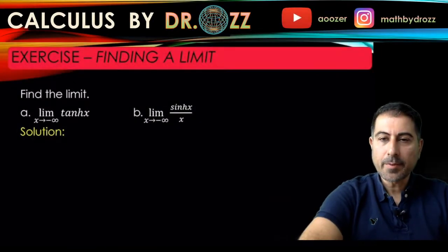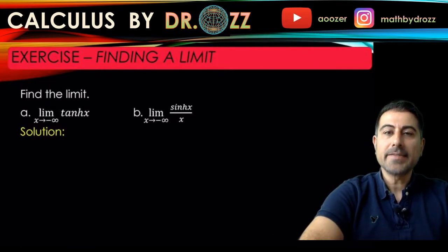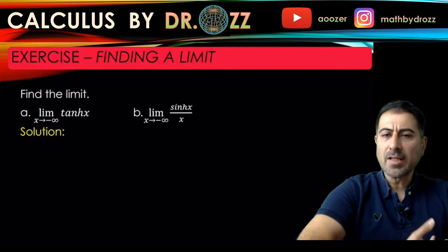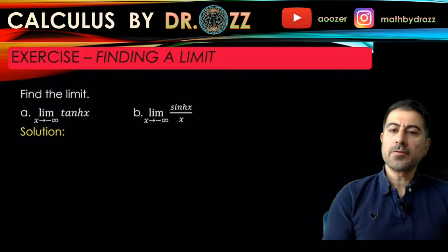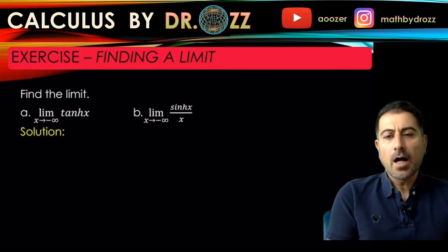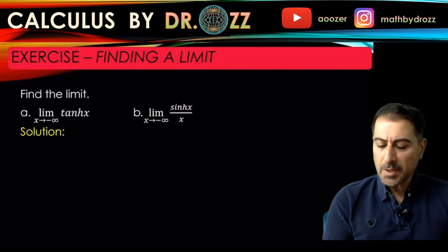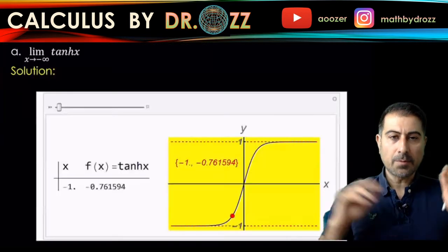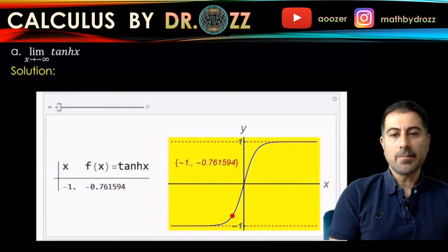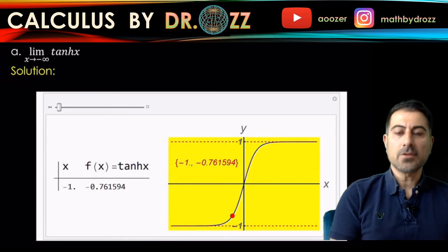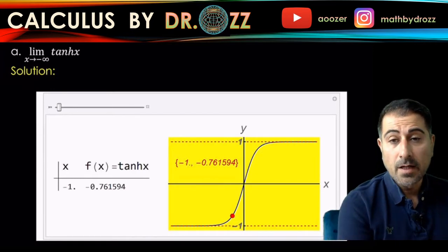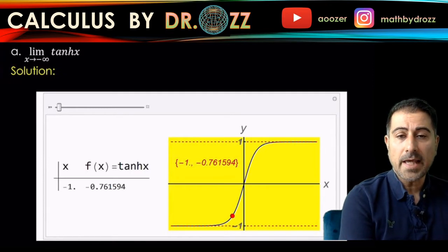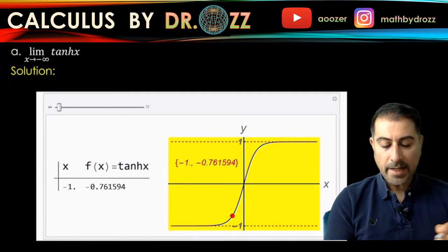All right, let's look at part A. We have the limit of tanh x as x approaches negative infinity. So this is a limit problem. We can always go ahead and use our TI-84 to graph this function, see what the behavior of the function looks like. And in fact, I did that using primitive techniques for calculating the limit. We can have a table of sample values and the graph of the function.